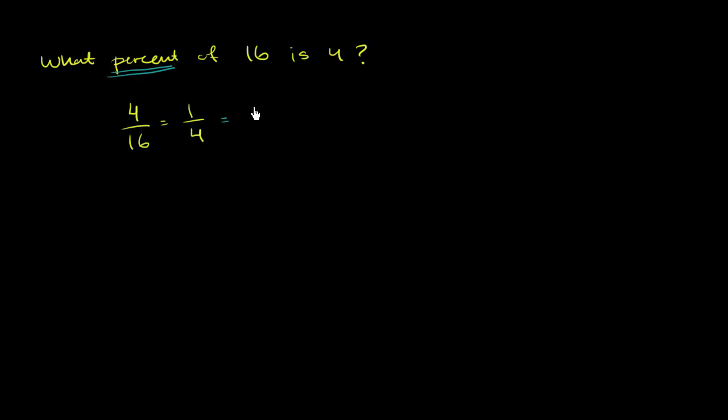So you could say, well, this is going to be equal to question mark over 100, or the part of 100. And there's a bunch of ways that you could think about this. You could say, well, look, if in the denominator, to go from 4 to 100, I have to multiply by 25. In the numerator, I need to also multiply by 25 in order to have an equivalent fraction. So I'm also going to multiply by 25.